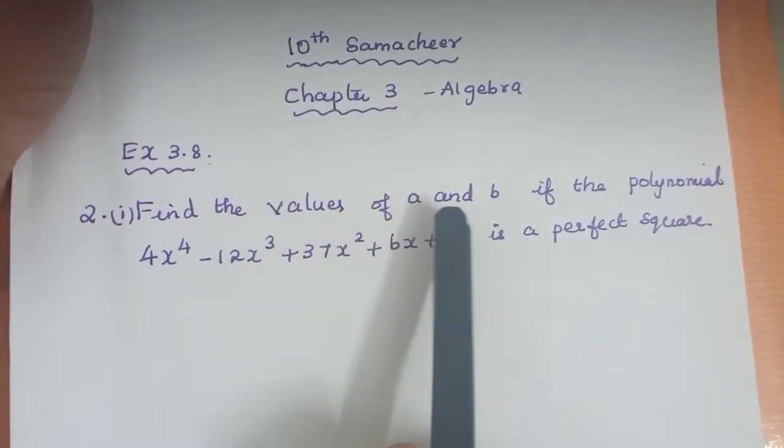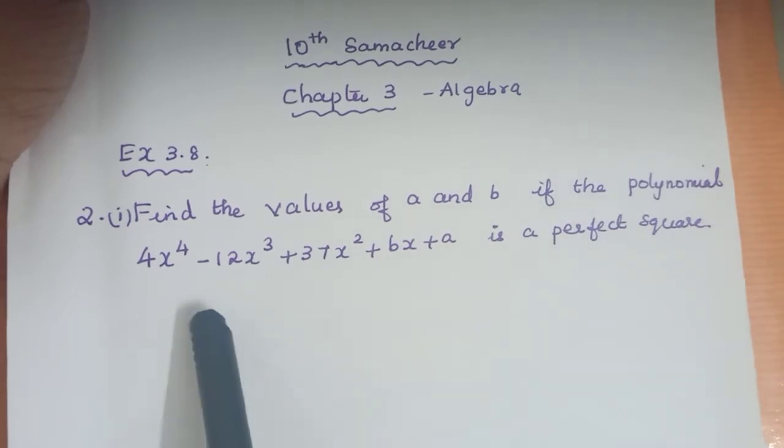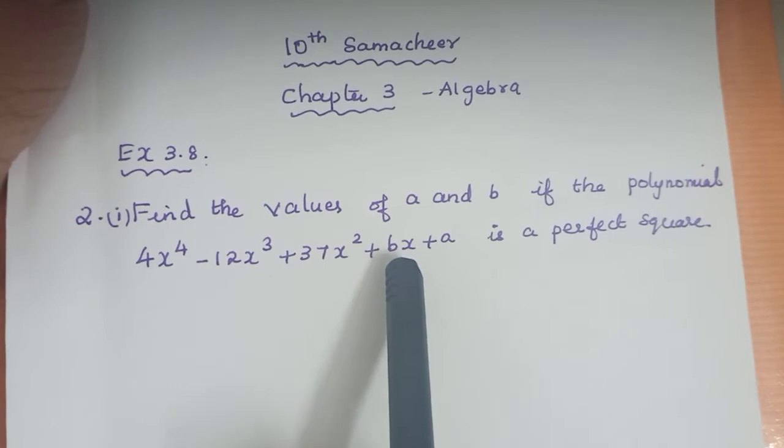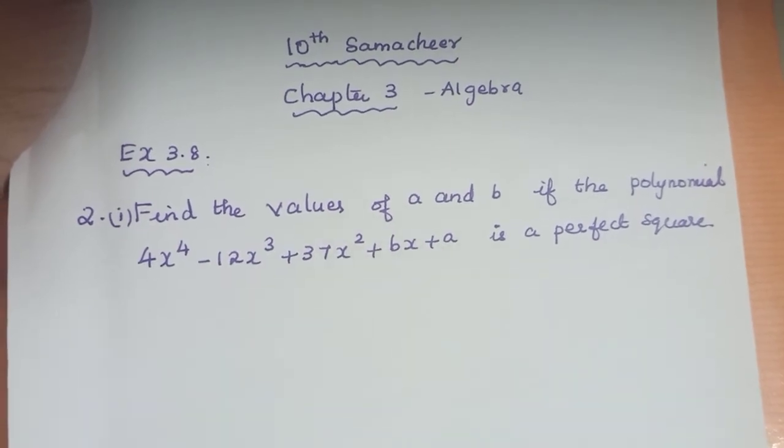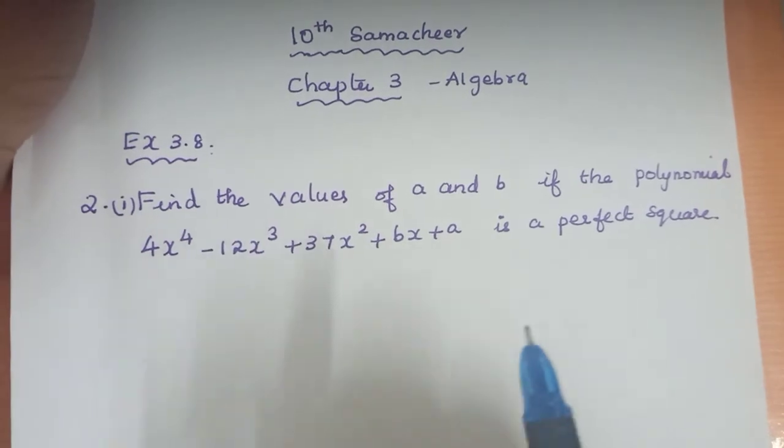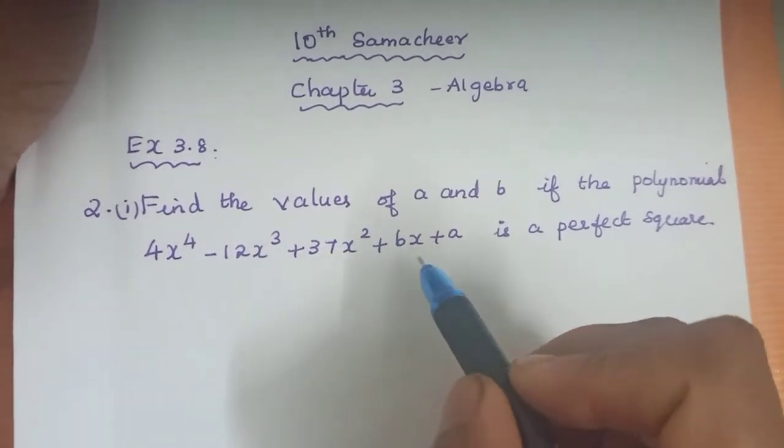Find the values of A and B if the polynomial 4x to the power 4 minus 12x cube plus 37x square plus bx plus a is a perfect square. We have to find the unknown values a and b.